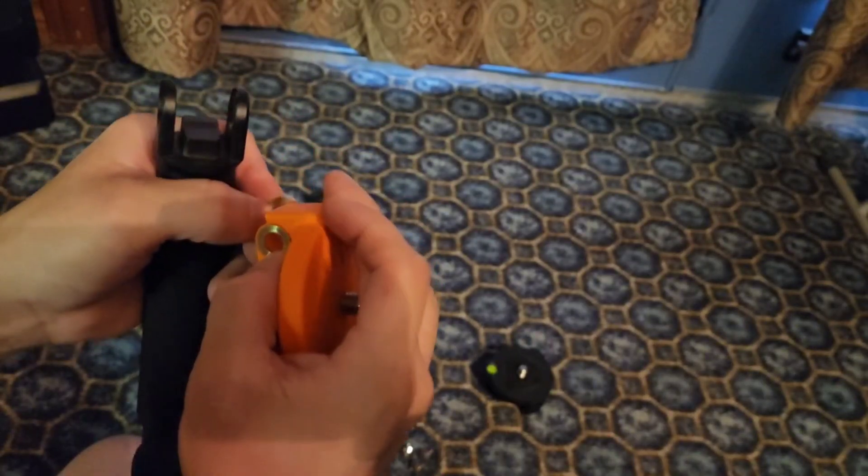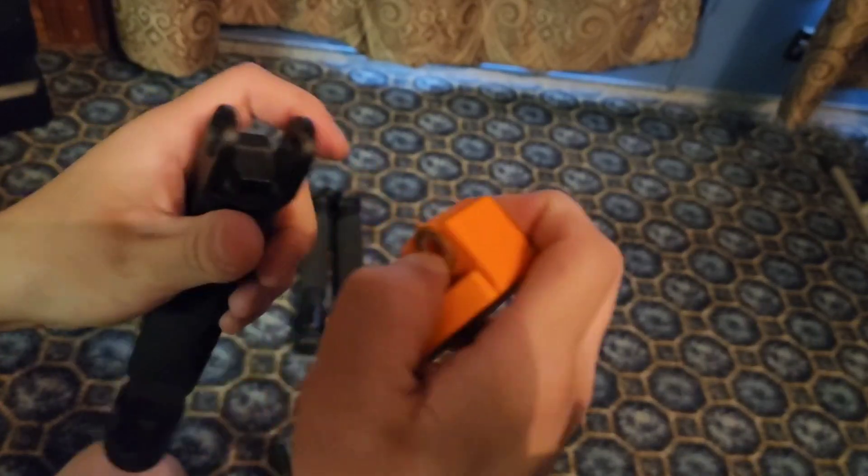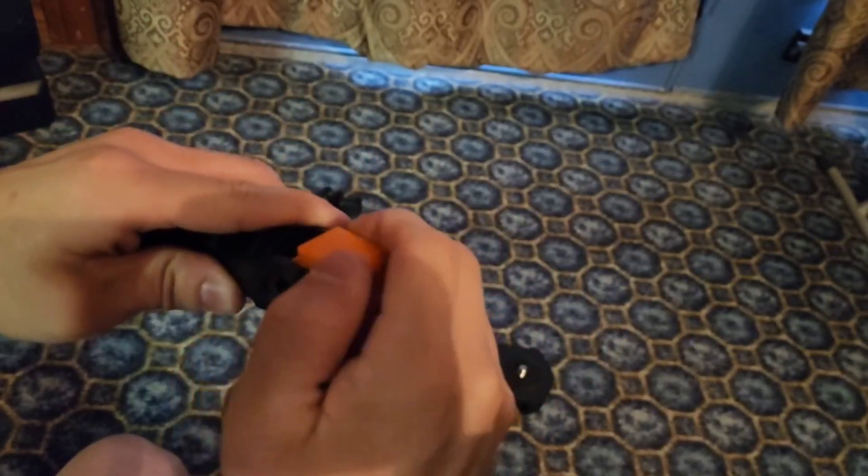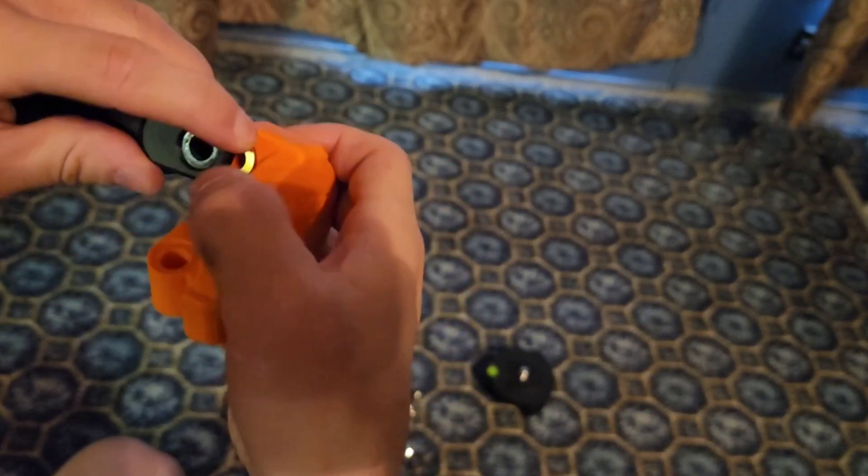Grab two of the washers and place them in the indentations on the adapter. They must be here, not outside the legs, or else the legs will be too loose or won't fit properly.